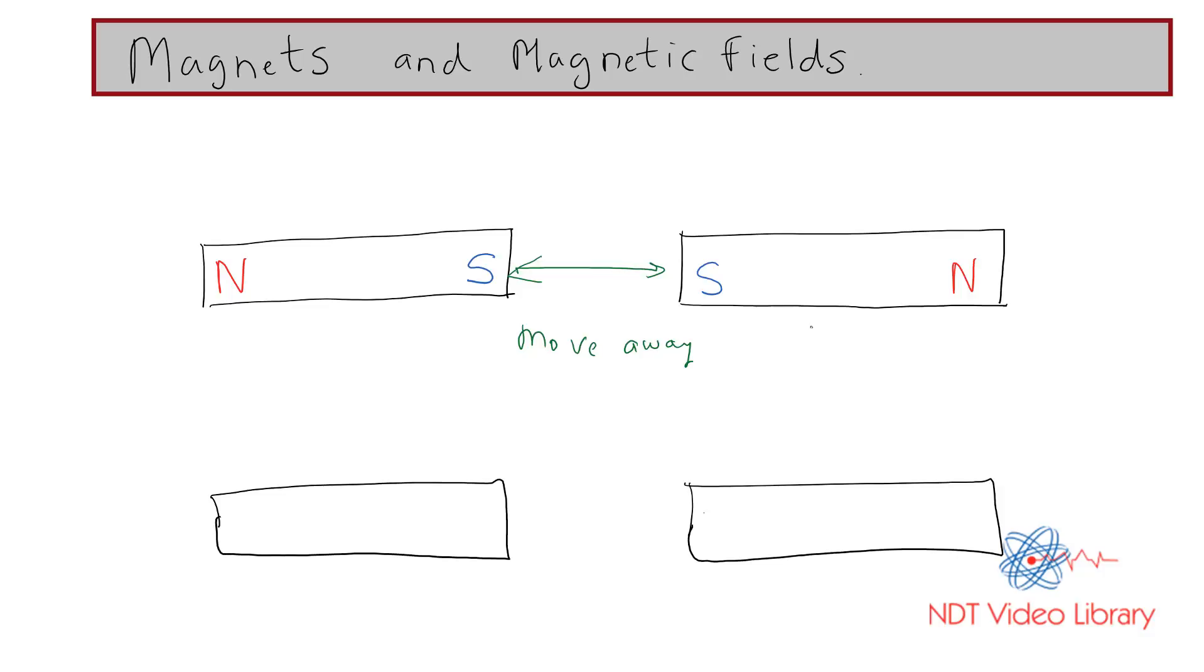Now if I flip one of the magnets so I have the north pole facing the south pole, in this case the two magnets will move close to each other. They'll attract each other. Opposite poles attract each other.